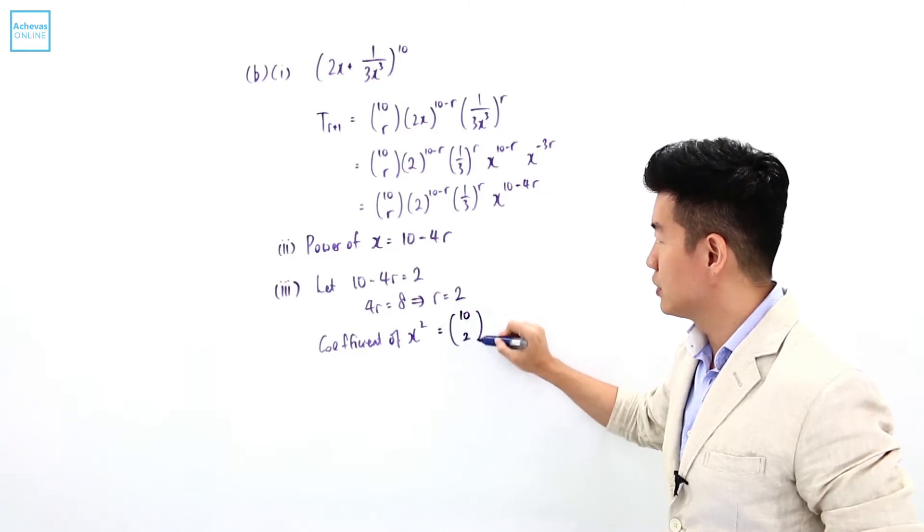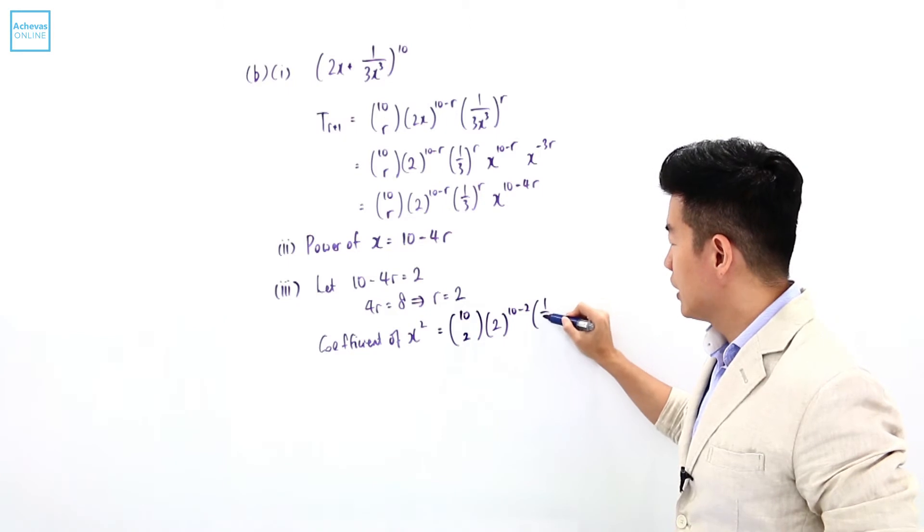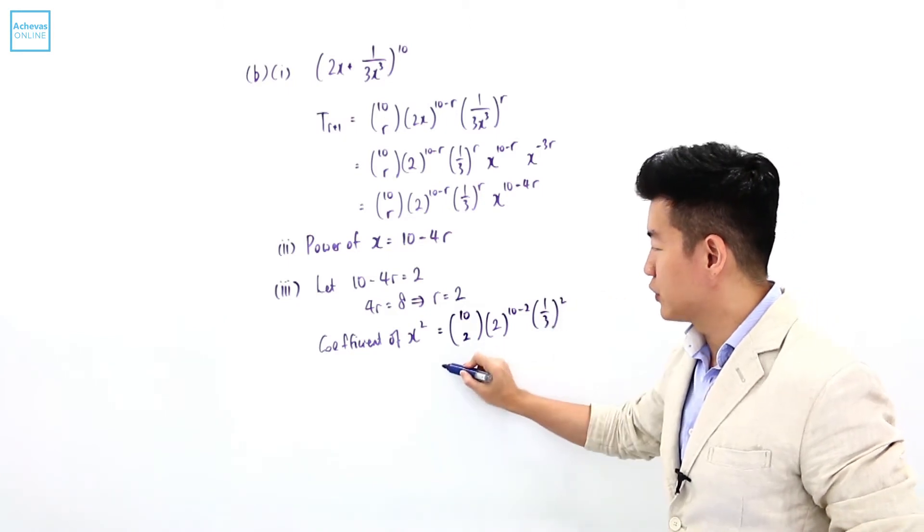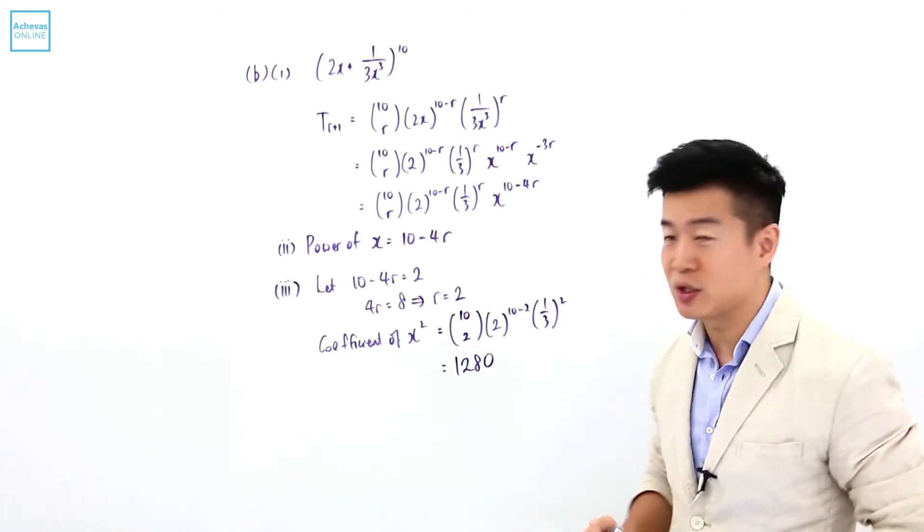So it will be 10 choose 2, 2 to the power of 10 minus 2, and 1 over 3 to the power of 2. And if I have to press this into my calculator, the coefficient is 1, 2, 8, 0.